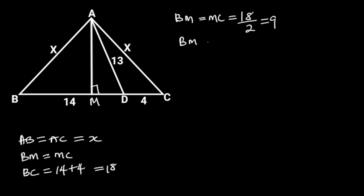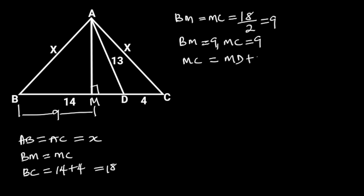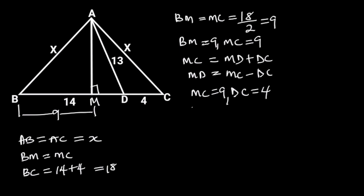So BM is equal to 9, and MC is equal to 9. But MC is equal to MD plus DC. It follows that MD is equal to MC minus DC. Since MC is equal to 9 and DC is equal to 4, MD is equal to 9 minus 4, which is equal to 5.